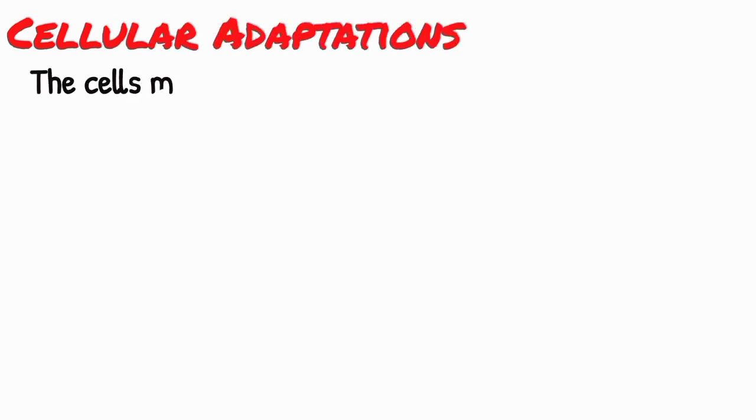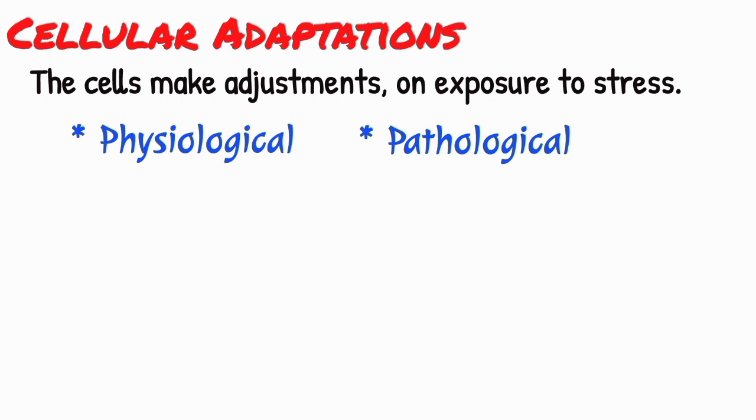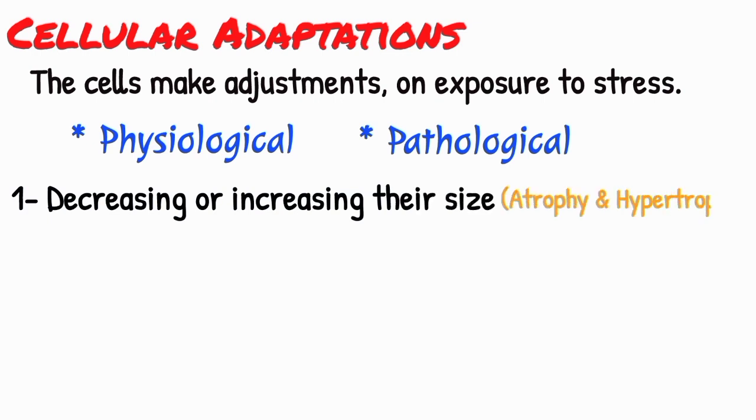For the sake of survival on exposure to stress, cells make adjustments with changes in their environment which may be of two types: physiological and pathological. Such adaptations occur by the following process: by decreasing or increasing their size, as happens during atrophy and hypertrophy respectively.